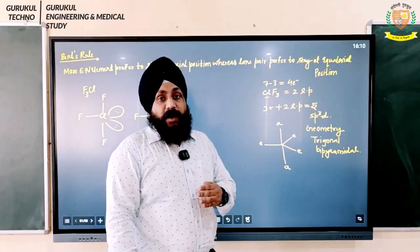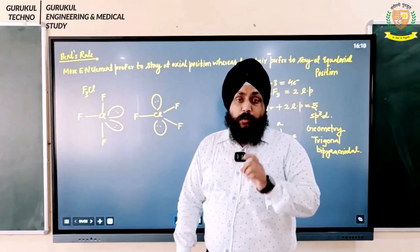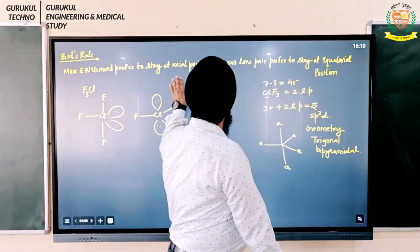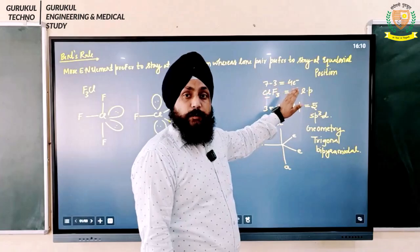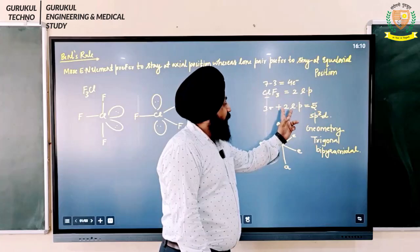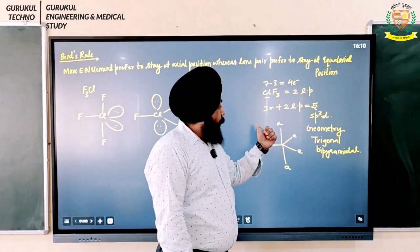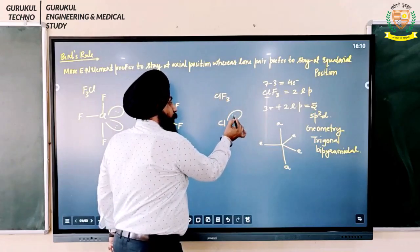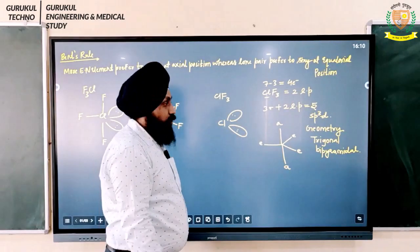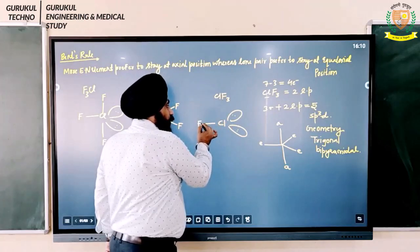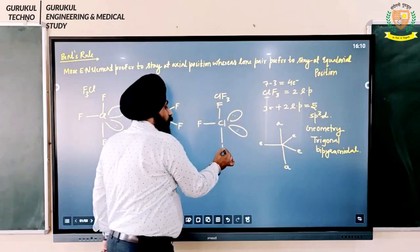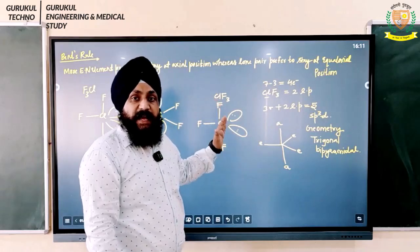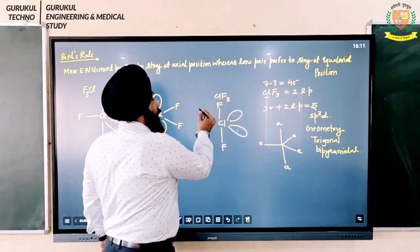The answer comes from Bent's Rule. Bent's Rule says more electronegative elements prefer to stay at axial position, whereas lone pairs prefer to stay at equatorial position. In CLF3 we have two lone pairs and three bond pairs. So the two lone pairs occupy the equatorial positions, and by default one fluorine is placed equatorially while the two remaining fluorines occupy the axial positions.